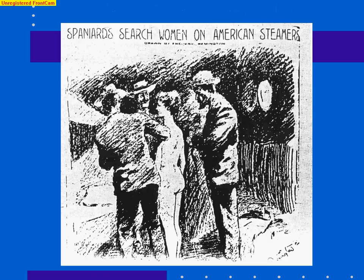Here is the explosion of the Maine as depicted in yellow journalism of the day. Another story depicted the Spanish strip-searching American women on board their ships — obviously horrifying to Victorian-era Americans. The front cover of The World declared the Maine explosion was caused by a bomb or torpedo.